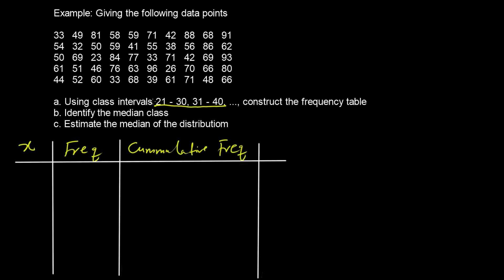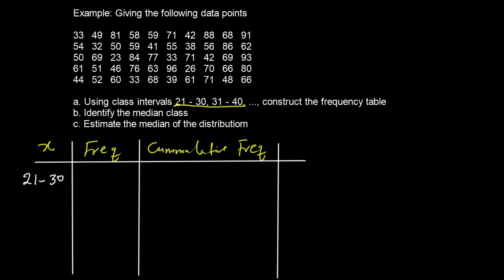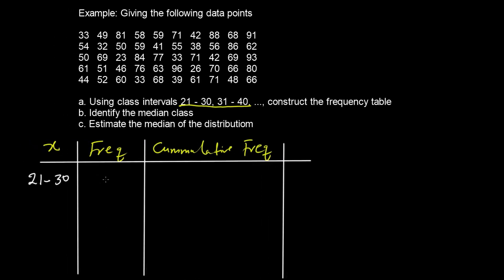Using the class intervals given to us, the first class is 21 to 30. We count the number of data points that fall in this category. For the first class, 21 to 30, counting through the data, I identify values 23 and 26 falling in that range, giving a frequency of 2.